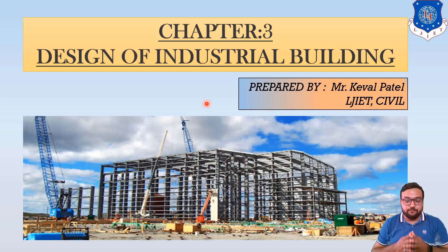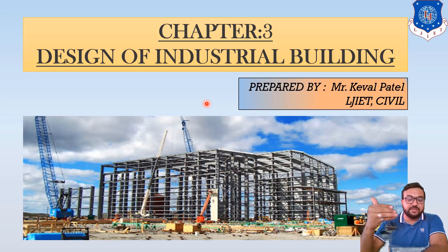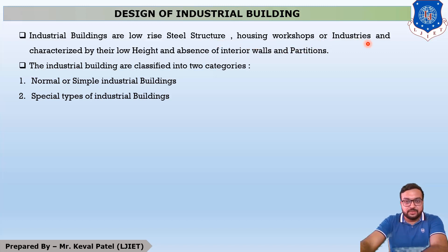The first question is: what is an Industrial Building? Generally, industrial buildings are made up of RCC, steel, or composite structure, depending on their height and type of industry. Industrial buildings are low-rise steel structures, because if we increase the height, wind load and all loads become heavy. Workshops or industries are characterized by low height and absence of interior walls and partitions, as those would create obstructions.